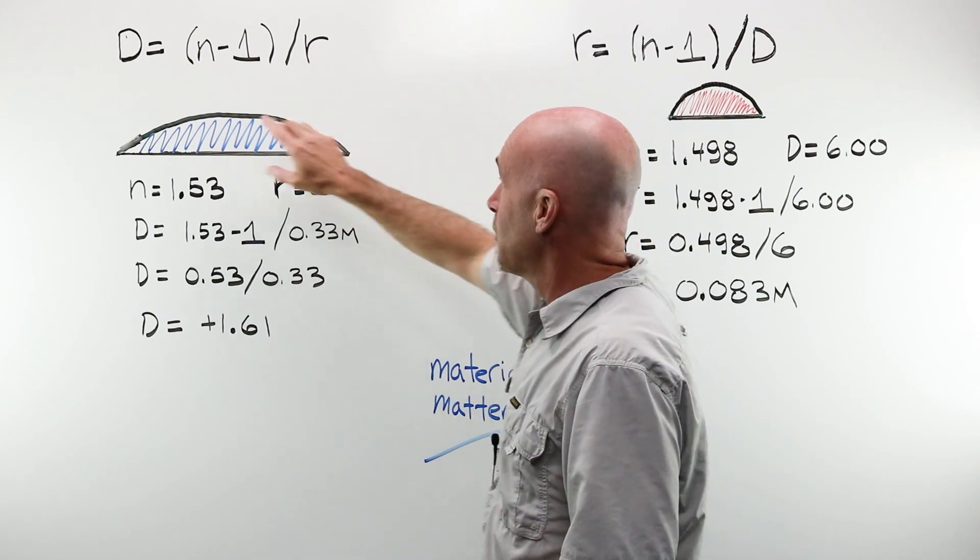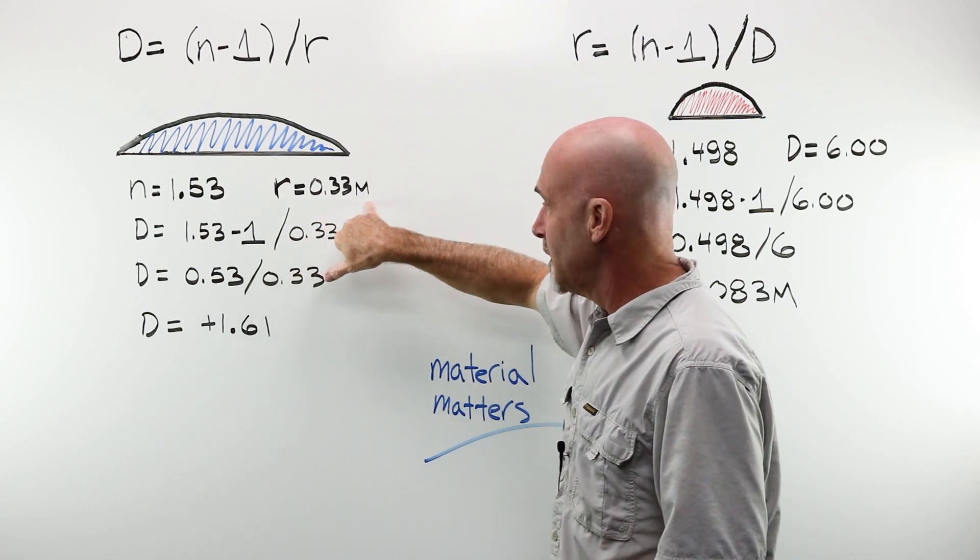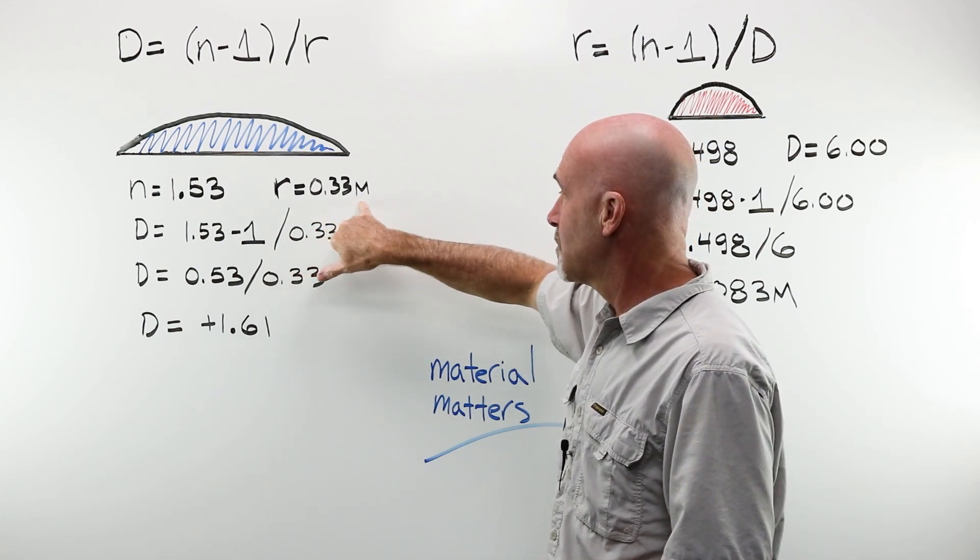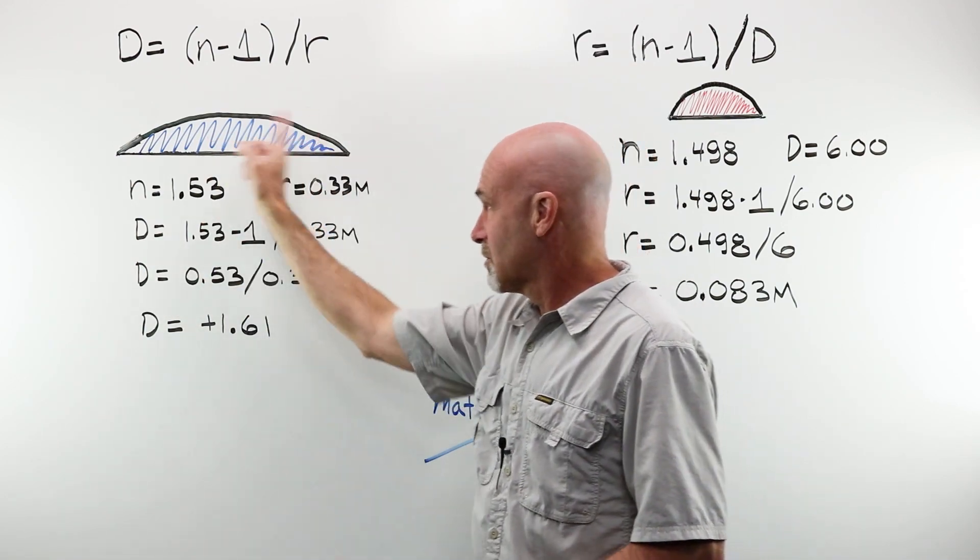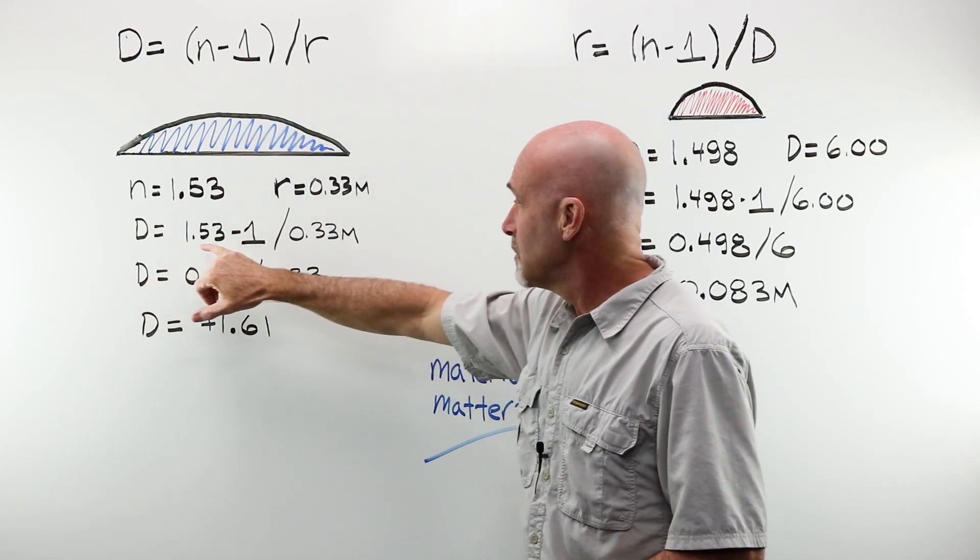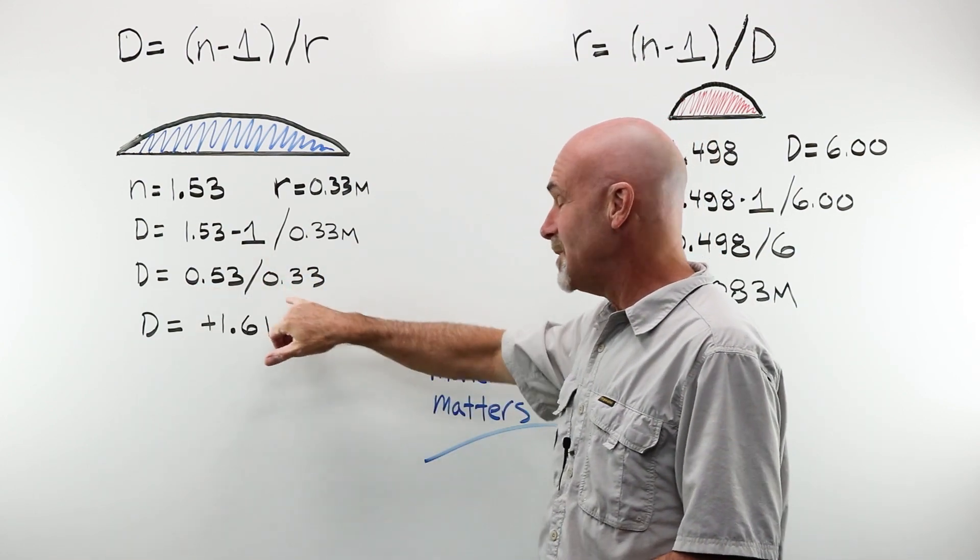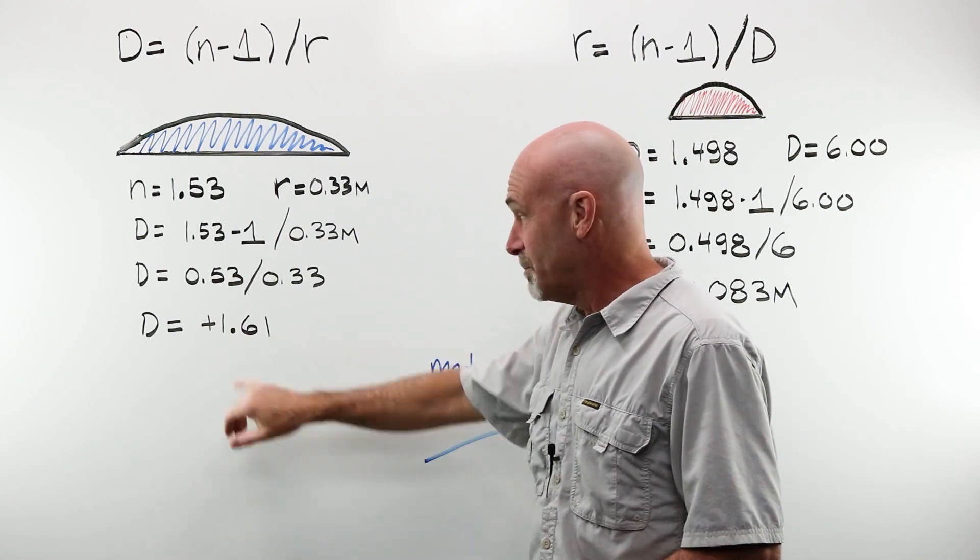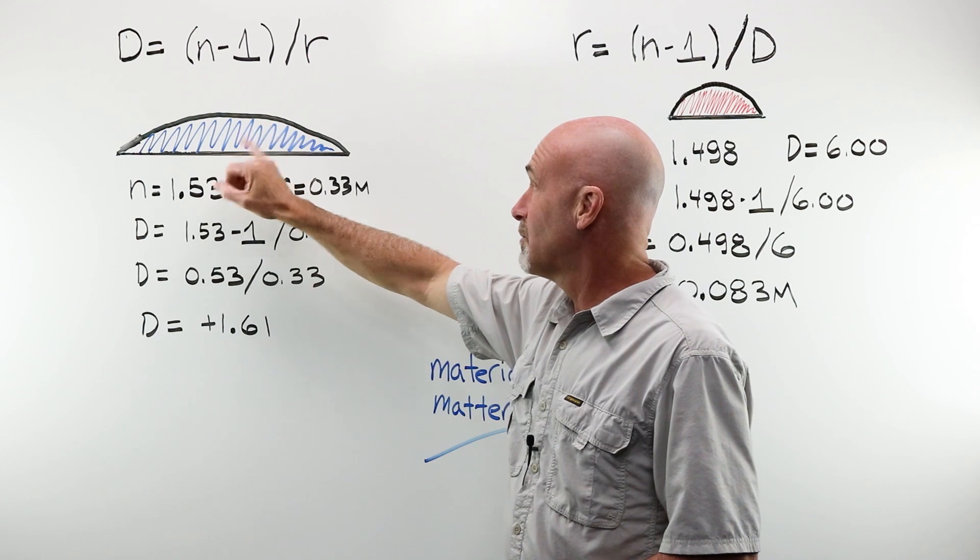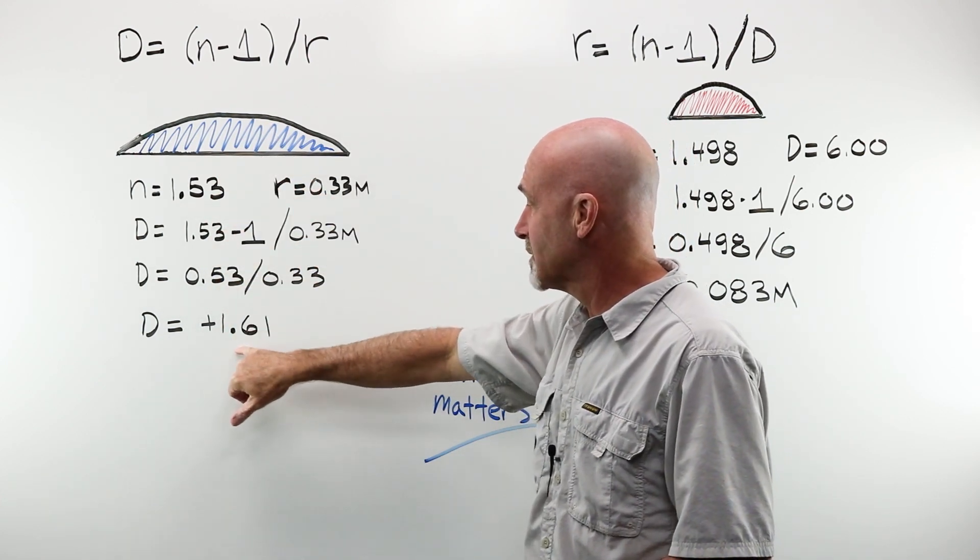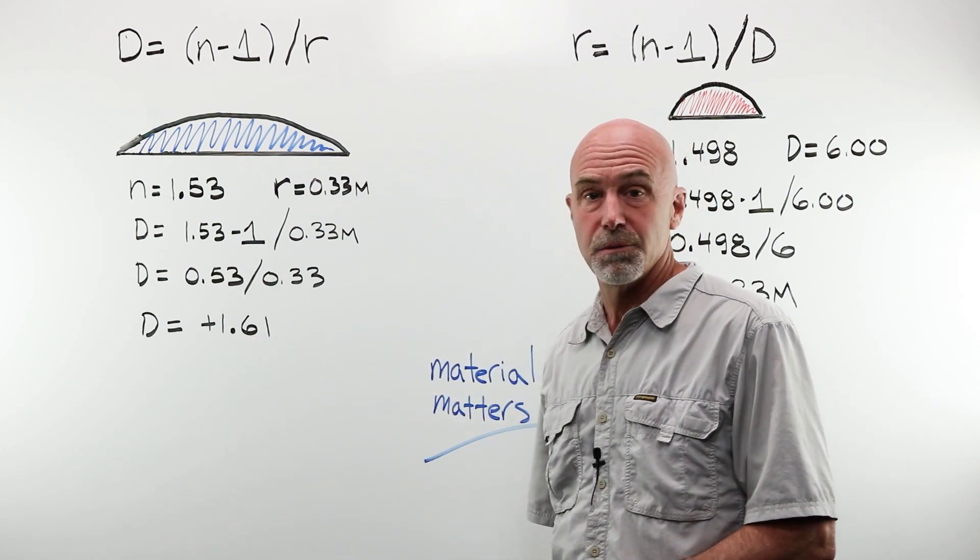For instance, if I want to solve for power, I'm given N and I'm given the radius of this curve in meters, 0.33, third of a meter, and that is actually correct. D is equal to 1.53 minus 1 divided by 0.33. 0.53 divided by 0.33 is 1.61. The power of a lens with a front radius of 0.3 meters and a plano back side. Pop it into the lens meter, that is what you're going to get.